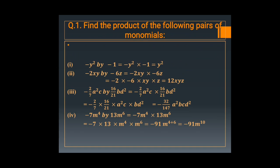In the first question you need to find the product of the following pair of monomials. Monomials means when there is only one term. Minus y square multiplied by minus 1 — minus into minus is plus, so y square into 1 equals y square.